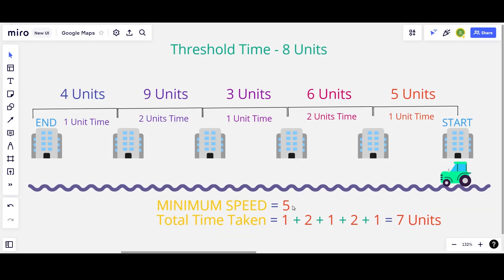Let's now increase the speed value from 4 to 5 units and check if we can cover the entire trip with 5 units of speed. So with the minimum speed of 5 units, we can cover the 5 units distance in 1 unit time. We can cover the next 6 units distance in 2 unit time. We can cover the next 3 unit distance in 1 unit time.